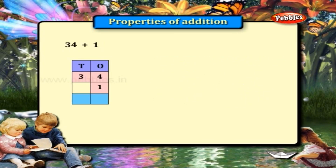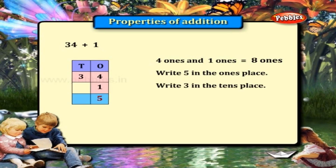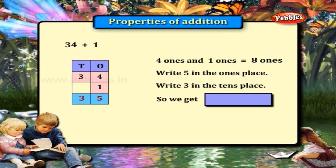34 plus 1. That is 4 ones and 1 one, which is equal to 5 ones. Write 5 in the ones place. Write 3 in the tens place. So we get 34 plus 1 is equal to 35.